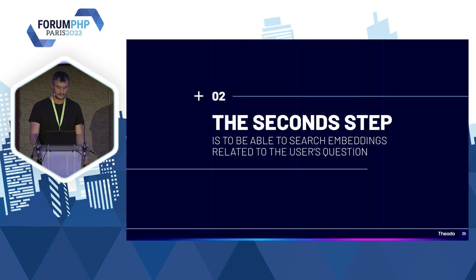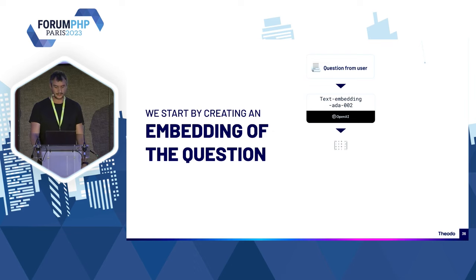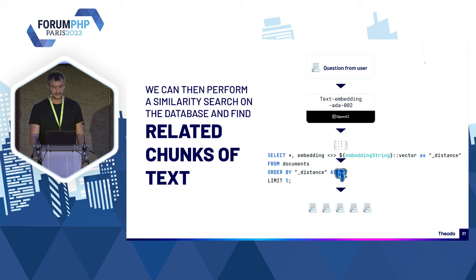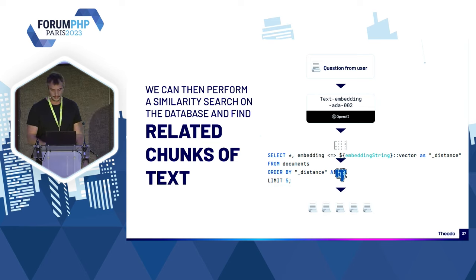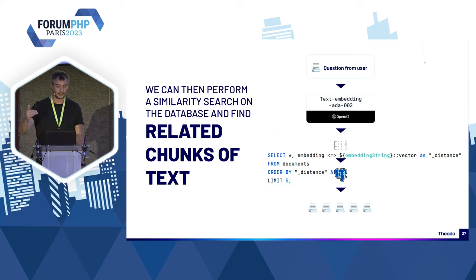La deuxième étape : faire des recherches par rapport à la question d'un utilisateur. C'est quasiment la même chose. On prend une question, on en fait un embedding directement — généralement pas besoin de la découper en chunks car les questions sont très courtes. On va chercher les embeddings, le contexte qui est le plus proche d'un point de vue sémantique dans votre VectorStore. L'autre raison pour laquelle j'aime bien Postgres, c'est qu'on peut le faire en SQL avec un petit opérateur bizarre pour calculer une distance, via une extension qui s'appelle PGVector — et ça vous sort les cinq éléments les plus proches de la question de votre utilisateur.